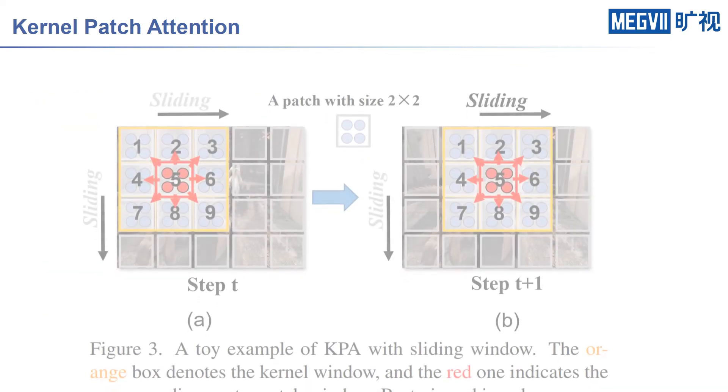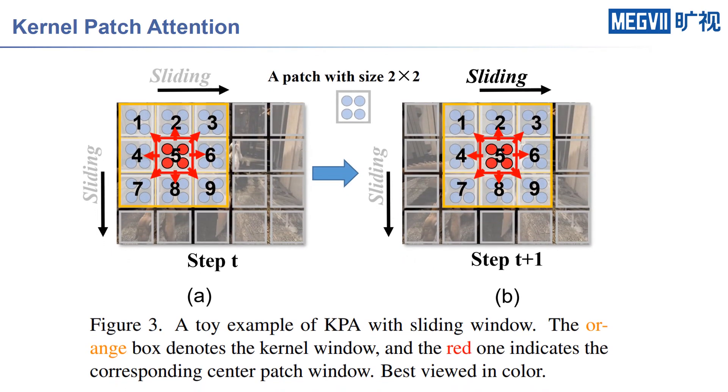A toy example of the sliding window-based scheme for motion feature smoothing is illustrated in the figure. To refine the motion feature in each patch window, our KPA captures the relations with all surrounding patches to mine the proper guidance information as the smoothness constraint.